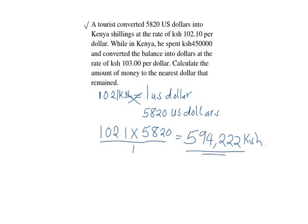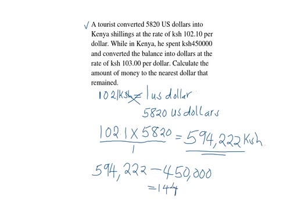We are also told that while in Kenya he spent 450,000 Kenyan shillings, so we subtract the amount of money he spent in Kenya. We have 594,222 Kenyan shillings minus 450,000, and this gives us 144,222 Kenyan shillings.